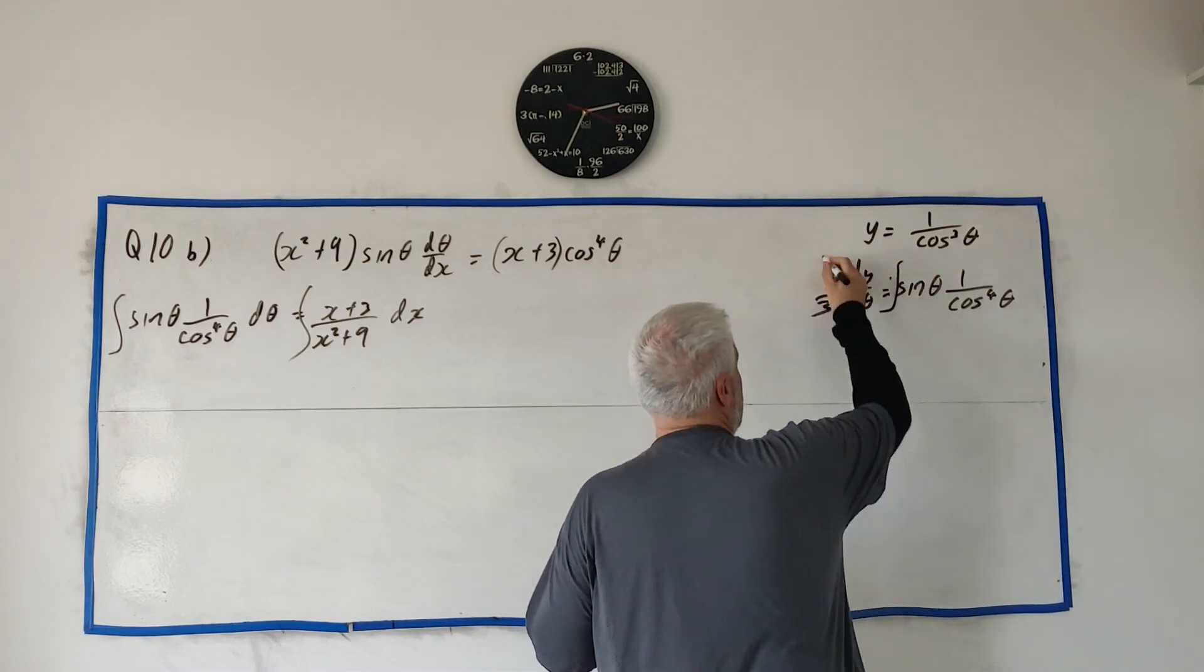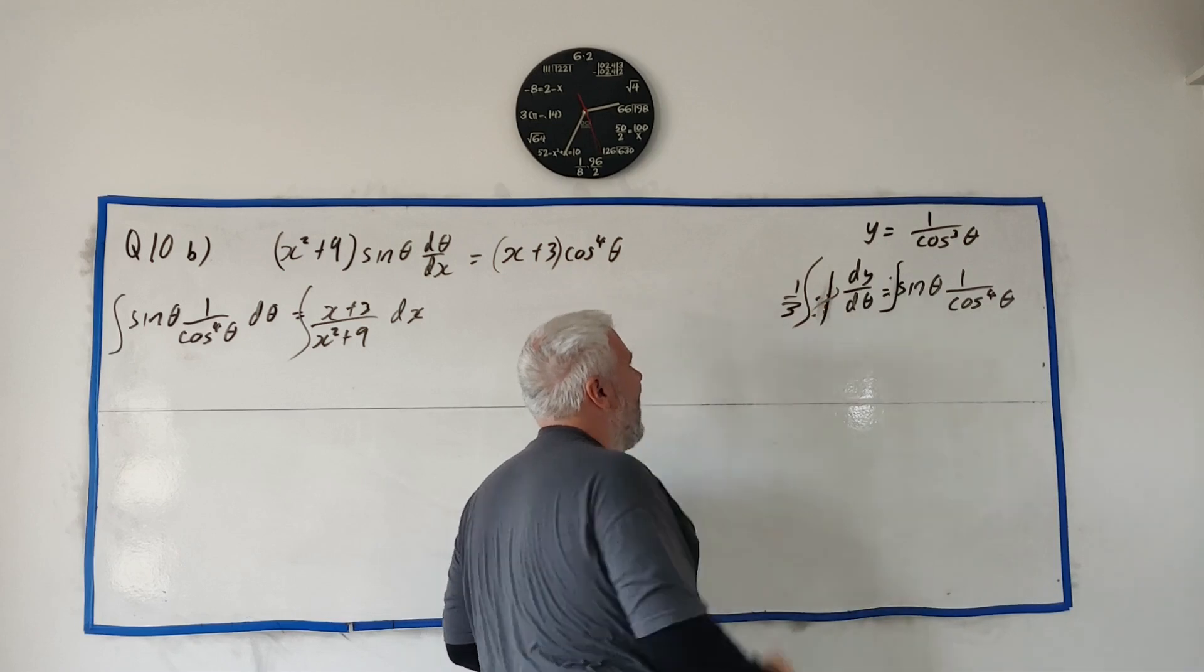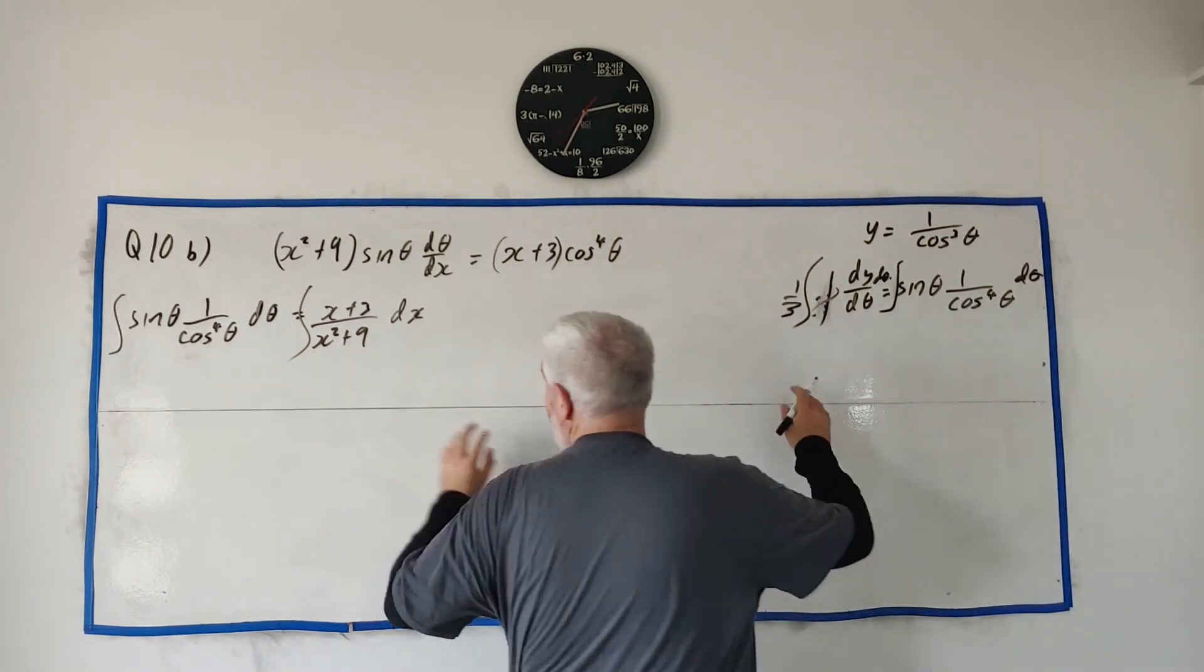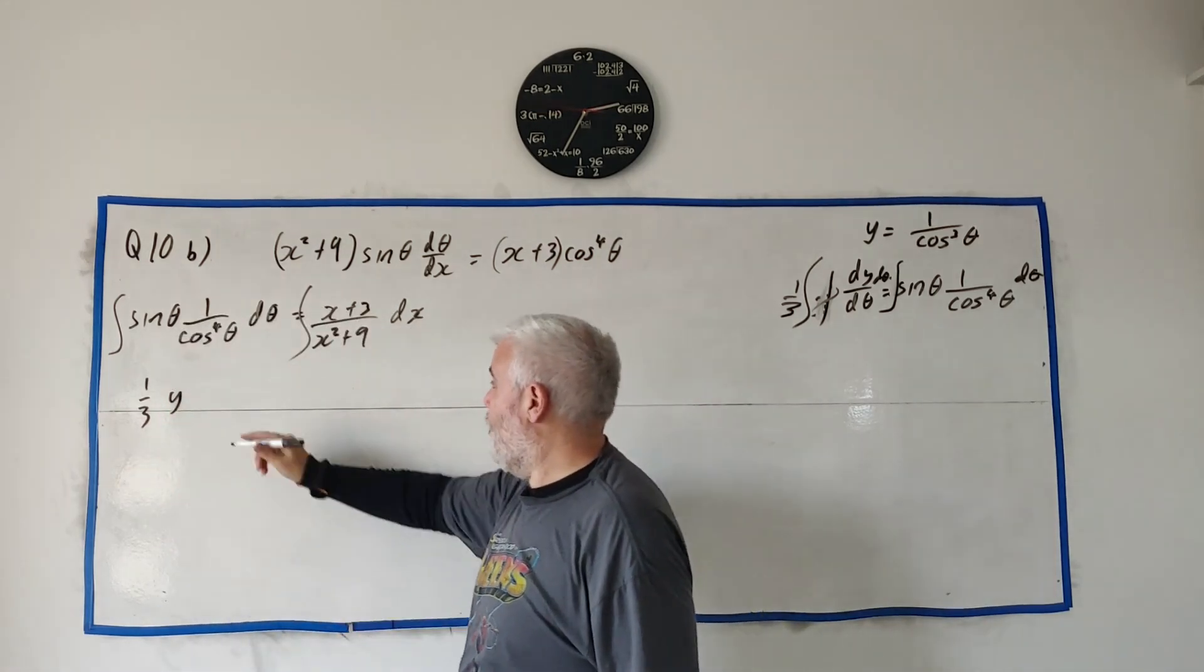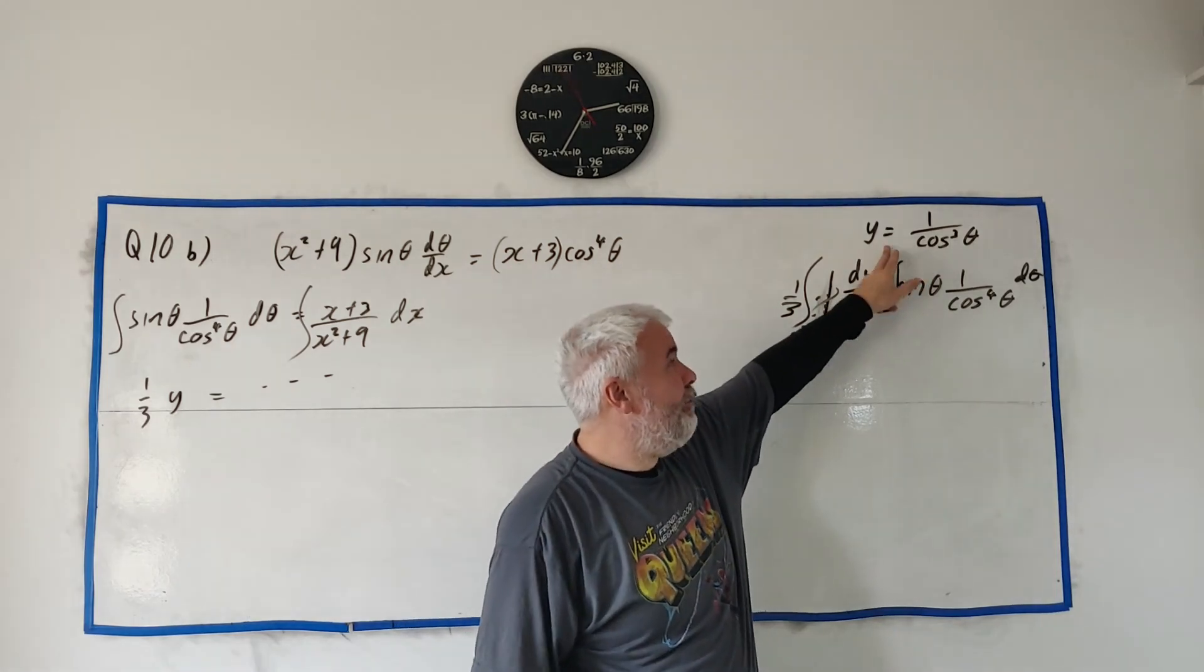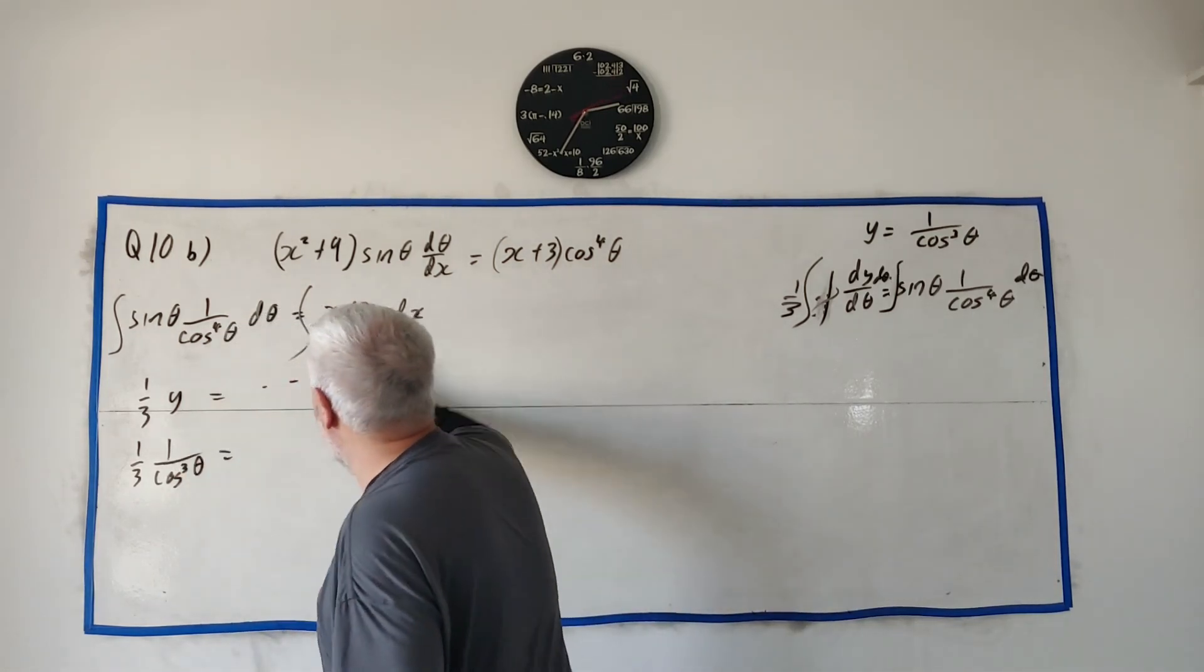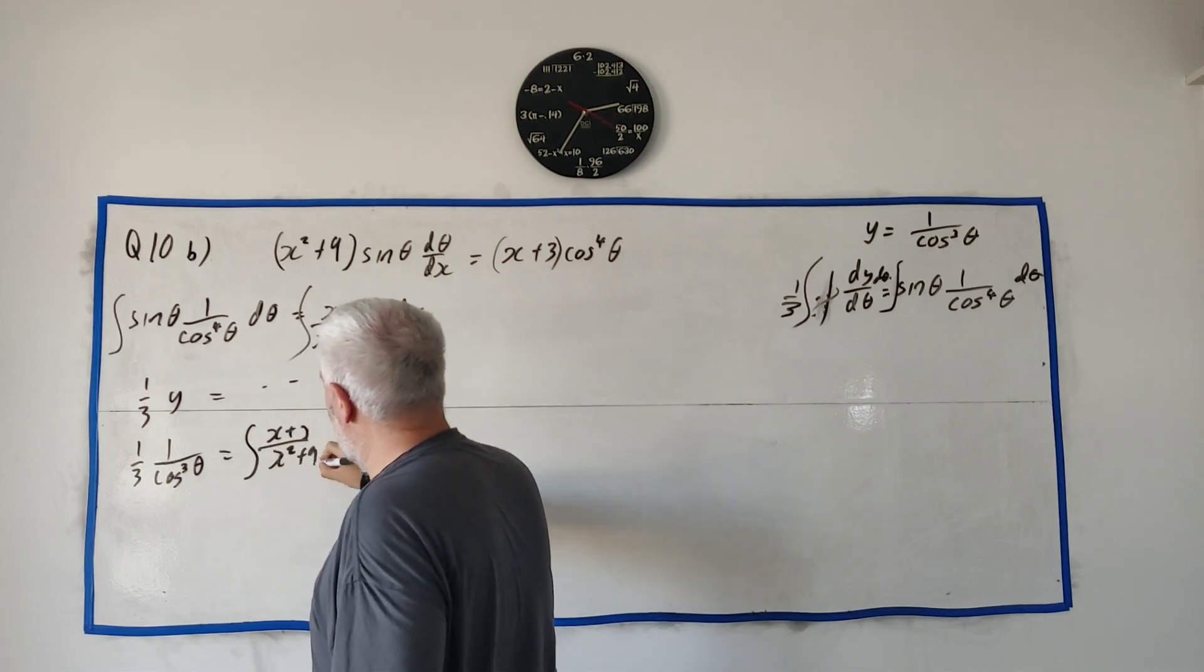If I take the integral of both sides, the 1 over 3 can come outside. The integral of dy/d-theta is just y. So this becomes 1 over 3 y equals the integral of the right side. But there's no y in this question. From part A, we need to leave 1 over 3 times 1 over cosine cubed theta, and that equals all this.